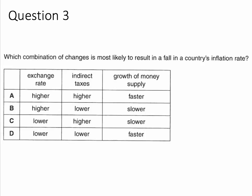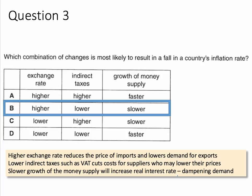The correct answer is B. All three of those, in theory, will help to bring down inflation. First of all, a higher exchange rate causes the price of imports to fall, and therefore less cost-push inflation, and it also should have a negative effect on export demand, affecting demand-pull inflation.